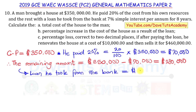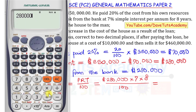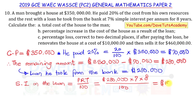Having gotten the loan amount, we are told it was taken at 7% simple interest per annum for 8 years. The formula for simple interest is: SI = (Principal × Rate × Time) / 100. So the simple interest on the loan is: (280,000 × 7 × 8) / 100. Using a calculator, that gives us $156,800.